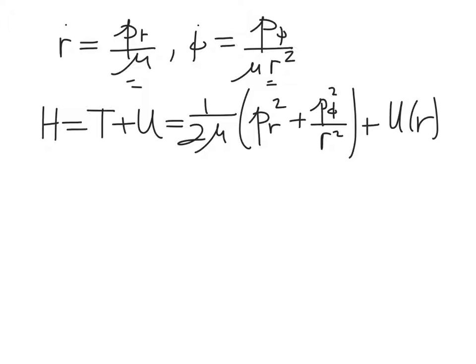Plus the potential energy which we've left unspecified except that it only depends on the radial distance. Okay. So now r dot according to Hamilton's dynamical equations is just the p_r derivative of the Hamiltonian. And we can see there's only one place where p_r appears and therefore r dot is just going to be p_r over mu, which of course we actually knew when we started.